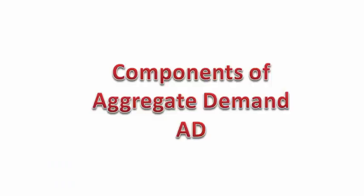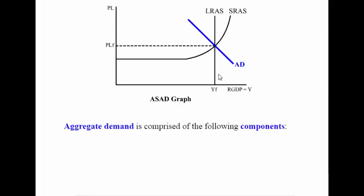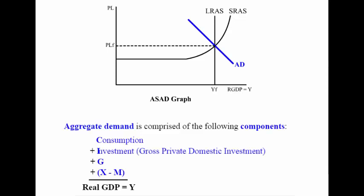Aggregate Demand is comprised of the following components: C plus I plus G plus X minus M. When you add all of those together, this gives you real GDP or national income. C stands for consumption, I stands for investment — which is gross private domestic investment — G stands for government spending, and X minus M stands for net exports.